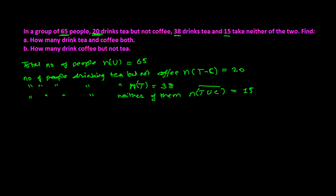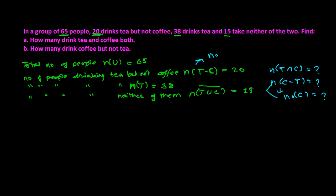The question asks how many drink tea and coffee both — we need to find T intersection C — and how many drink coffee but not tea, which is C difference T. You can also write that as the people who only take coffee. Similarly, the people who just take tea but not coffee is 20.